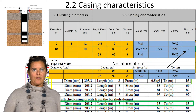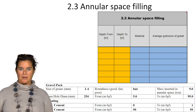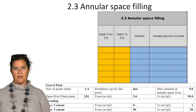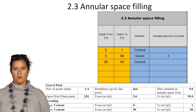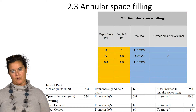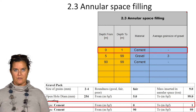We will follow the same procedure for the annular space filling — inputting manually from the borehole completion report the characteristics in the yellow cells and from the drop-down menu in the blue cells.